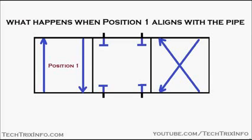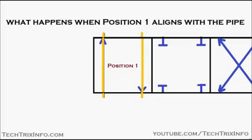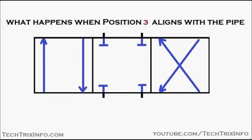When position one aligns with the pipe, you can see there is a chance of flow because the pipe is connected. Flow is happening in both directions — that's how position one of the control valve gets aligned and the flow occurs.